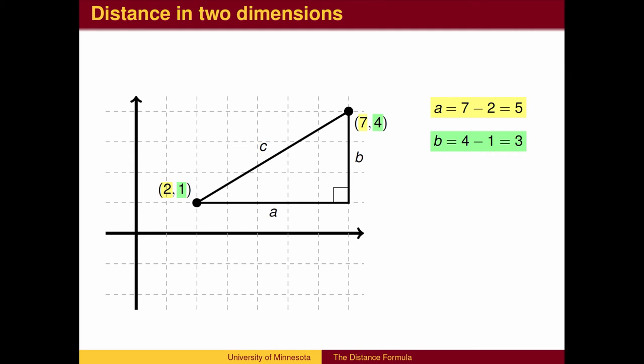We find the x-distance and y-distance, a and b respectively, by subtracting coordinates. We compute the distance using the Pythagorean Theorem. We can take a square root to simplify.